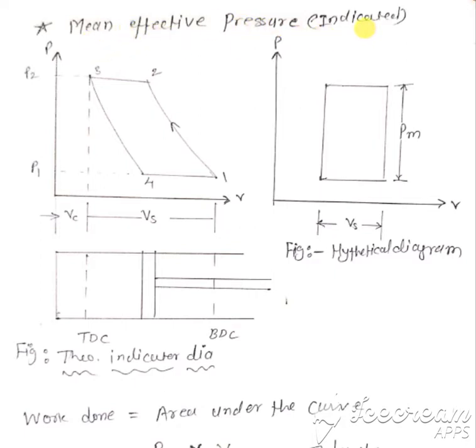Main effective pressure, which is indicated main effective pressure in case of reciprocating compressor. Consider theoretical indicator diagram, theoretical PV diagram for compressor considering clearance. Process 1 to 2 is compression, 2 to 3 delivery, 3 to 4 expansion, and 4 to 1 suction.